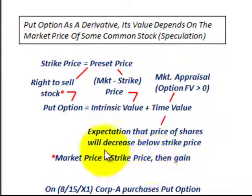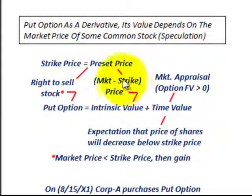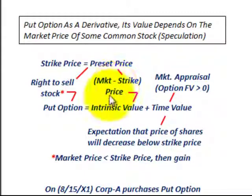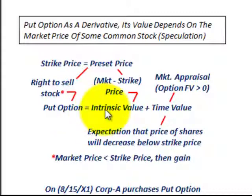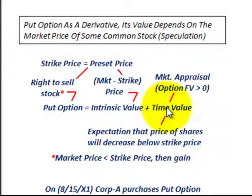Because what you could do is buy the stock at the market price and then sell it at the higher strike price, so the difference would give you a gain. When you're dealing with these put options, there are really two elements to them: there's the intrinsic value portion of the put option, and then the time value portion.